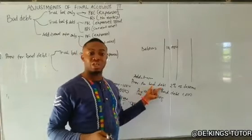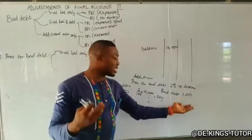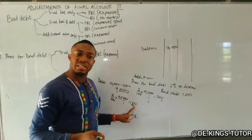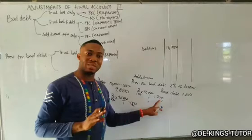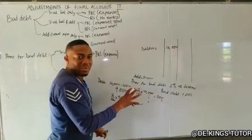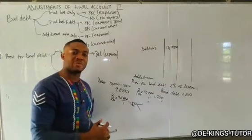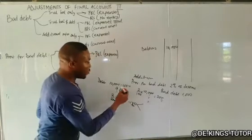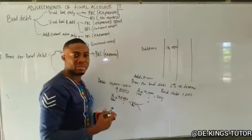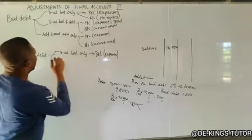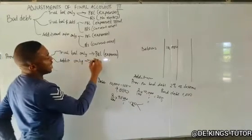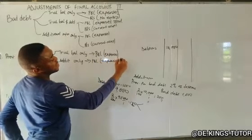When you have provision for bad debt in additional information given as a percentage, calculate it on debtors. If there is a bad debt figure, deduct it first. The resulting amount goes to the profit or loss account as expenses, and also goes to the balance sheet to reduce the debtors figure. In the balance sheet, write the debtors amount of 10,000, then deduct the bad debt of 1,000 and also reduce by the provision for bad debt.